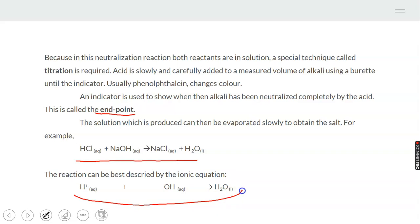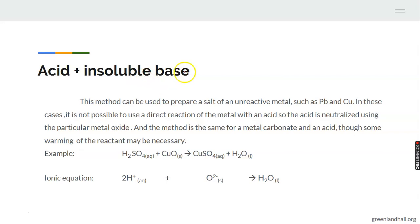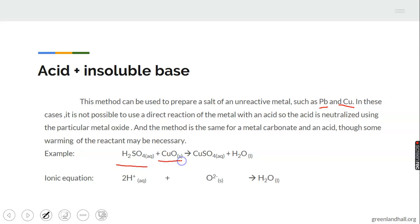The equation of the reaction for sodium hydroxide and HCl — strong acid and strong base — gives you salt and water. This is the ionic equation. Next: acid plus insoluble base. This method can be used to prepare a salt of an unreactive metal such as lead or copper. It is not possible to use a direct reaction of the metal with an acid, so the acid is neutralized using the particular metal oxide.